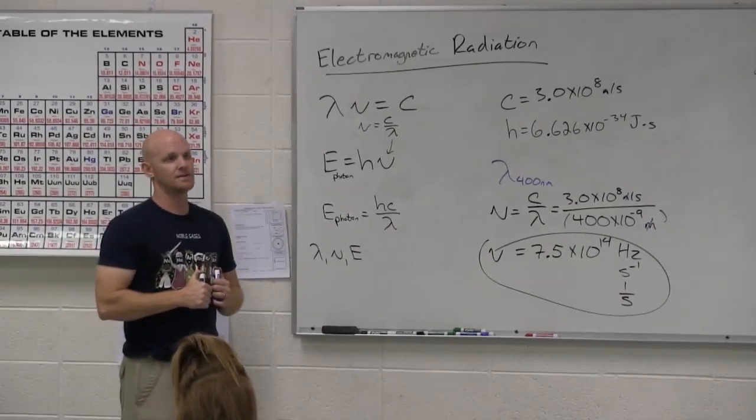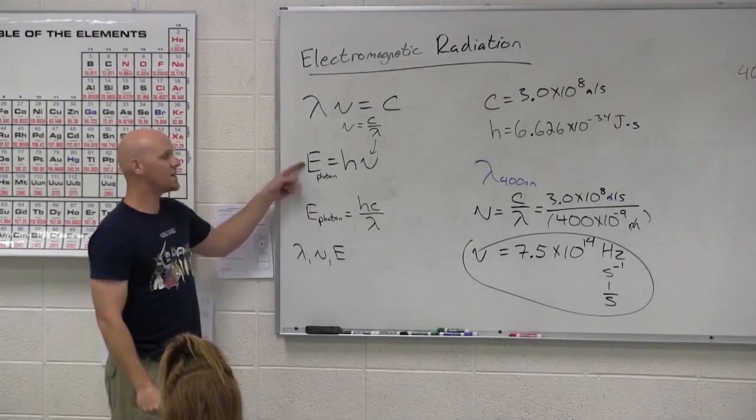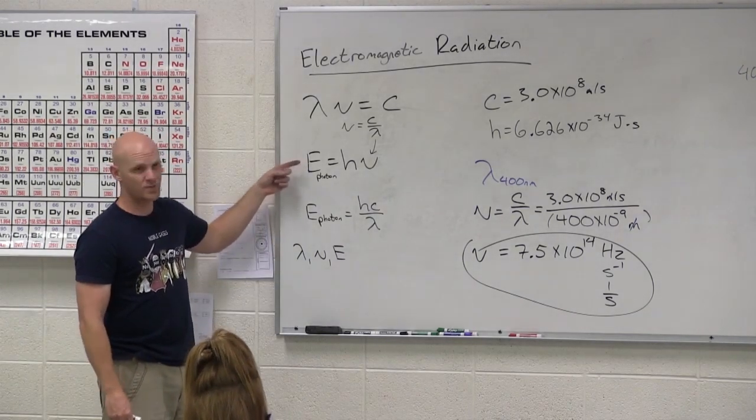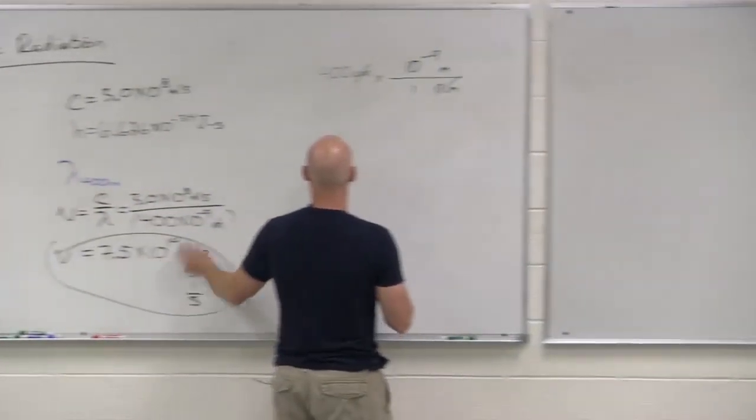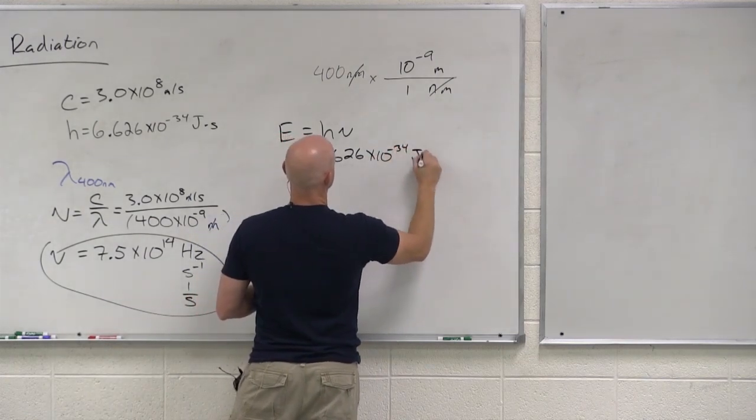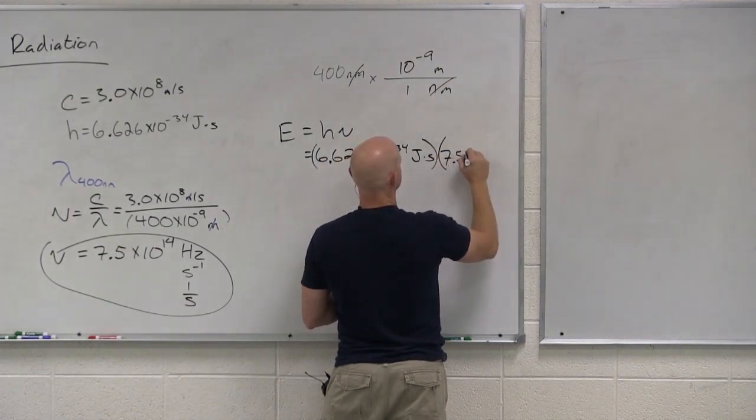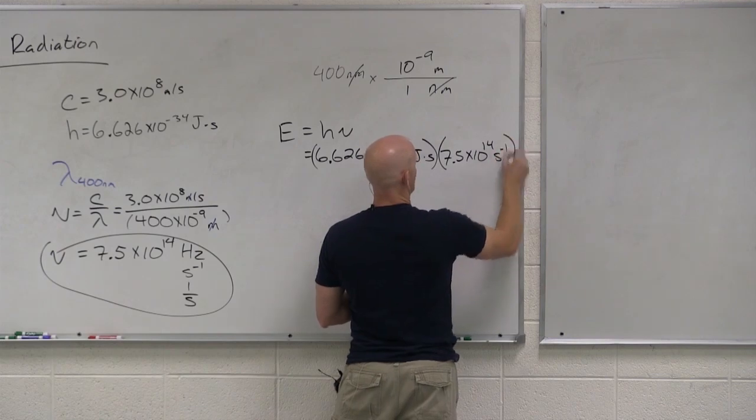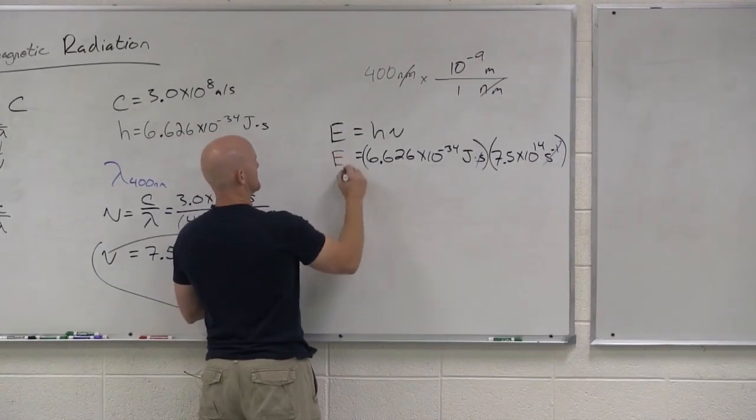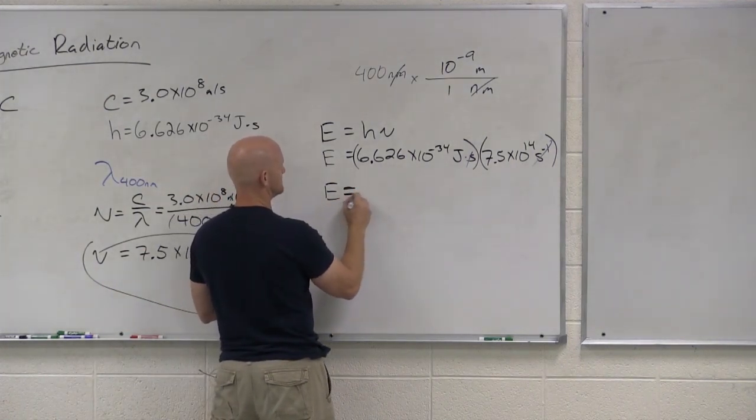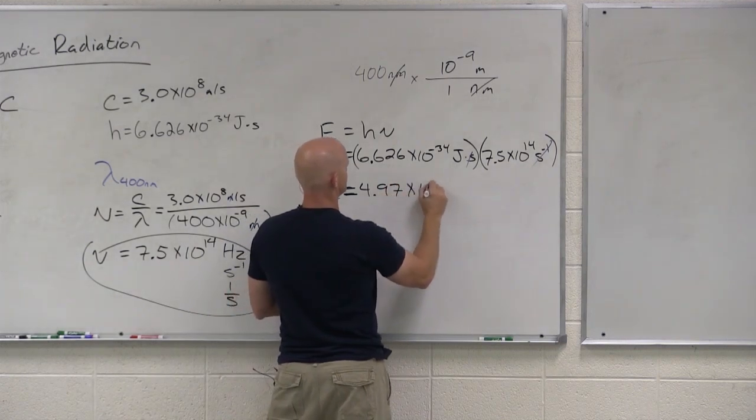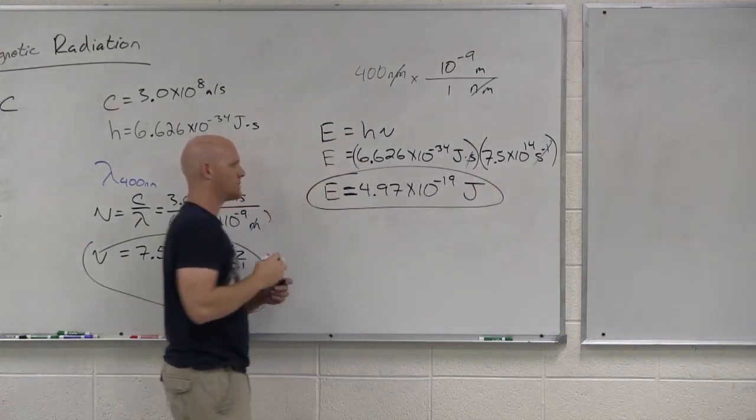Now we've got the frequency. What else can we solve for? We already have the wavelength. Let's get the energy of the photon. Which equation do you want to use? We now have both the frequency and the wavelength, so you can use either equation. Which one do you want to use? This one's a little easier to me as well, so we're going to use this equation to get the energy of the photon. We'll use the frequency we just calculated. I'm going to write that as seconds to the minus 1, so you can see that seconds times seconds to the minus 1 cancels, and we're left with an answer in Joules. 4.97 times 10 to the minus 19 Joules.